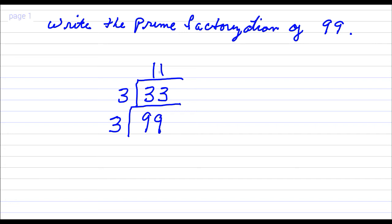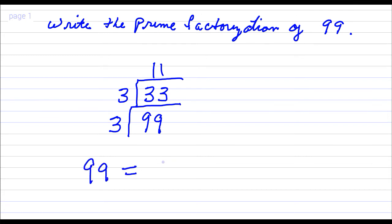And 11 is a prime number, so you can stop right there. So 99 — the prime factorization of 99 — is 3 times 3 times 11.